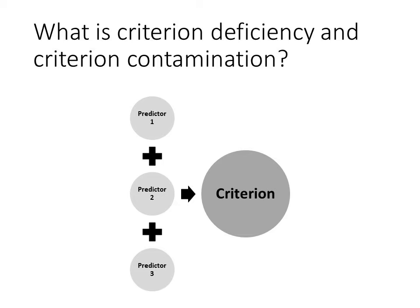Criteria are the standards, or the yardsticks, that we use to measure employees' success or failure. IO psychologists commonly focus on job performance as a criterion, but they might also measure attitudes, motivation, or other desired outcomes of the organization. In some situations, like selection, we use multiple predictors to predict a criterion — we might use two or three selection tests to predict who's going to be the best performers.